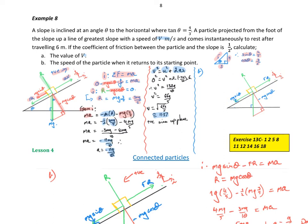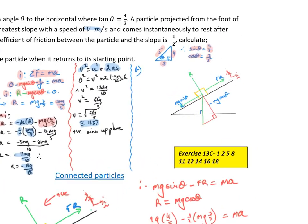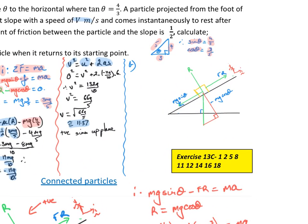What's the speed of the particle when it returns to its starting point? So my particle has been shot up the plane. After 6 metres, the slope and friction have reduced its motion to zero, and then it starts sliding back down the plane. So what does that diagram look like? We've now got motion down the plane. I've got mg sine theta acting down the plane still, mg cos theta and R haven't changed, but this time friction is acting up the plane because it's in the opposite direction to motion.